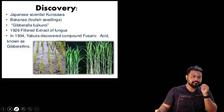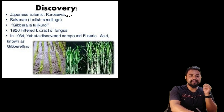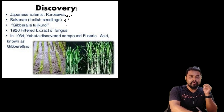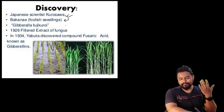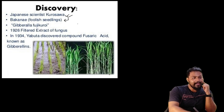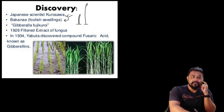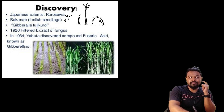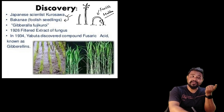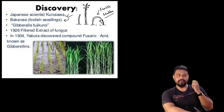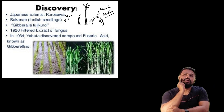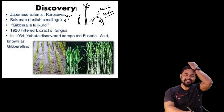The discovery was made by a Japanese scientist named Kurosawa. Kurosawa was working on a disease called foolish seedling disease. Normally the size is very large; if the disease is present, the seedling grows abnormally tall. They don't have sufficient food. They are called foolish seedlings.